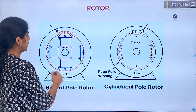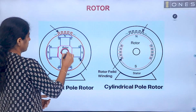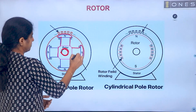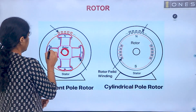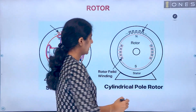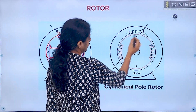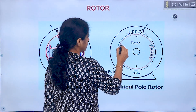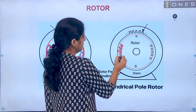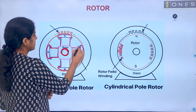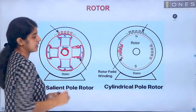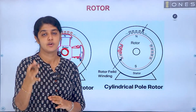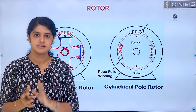This is the rotor shaft, and this is the projecting pole — that is the salient pole structure. This is the non-salient pole structure, which uses a cylindrical rotor. In this cylindrical rotor, the field windings are placed in slots. We have DC excitation for the field windings, creating north pole and south pole polarity.